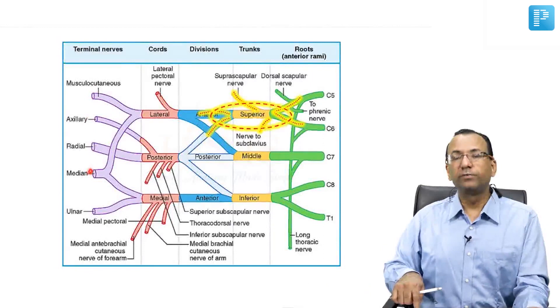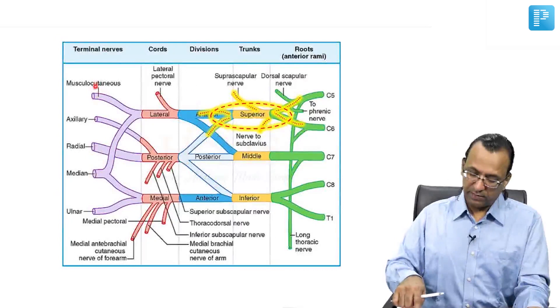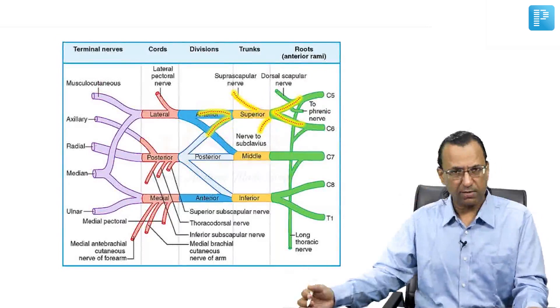Wherever the injury is, only distal area is involved not the proximal area. So if this is the injury level then distal nerves will be involved not the proximal nerves. Like which nerve are you talking about?